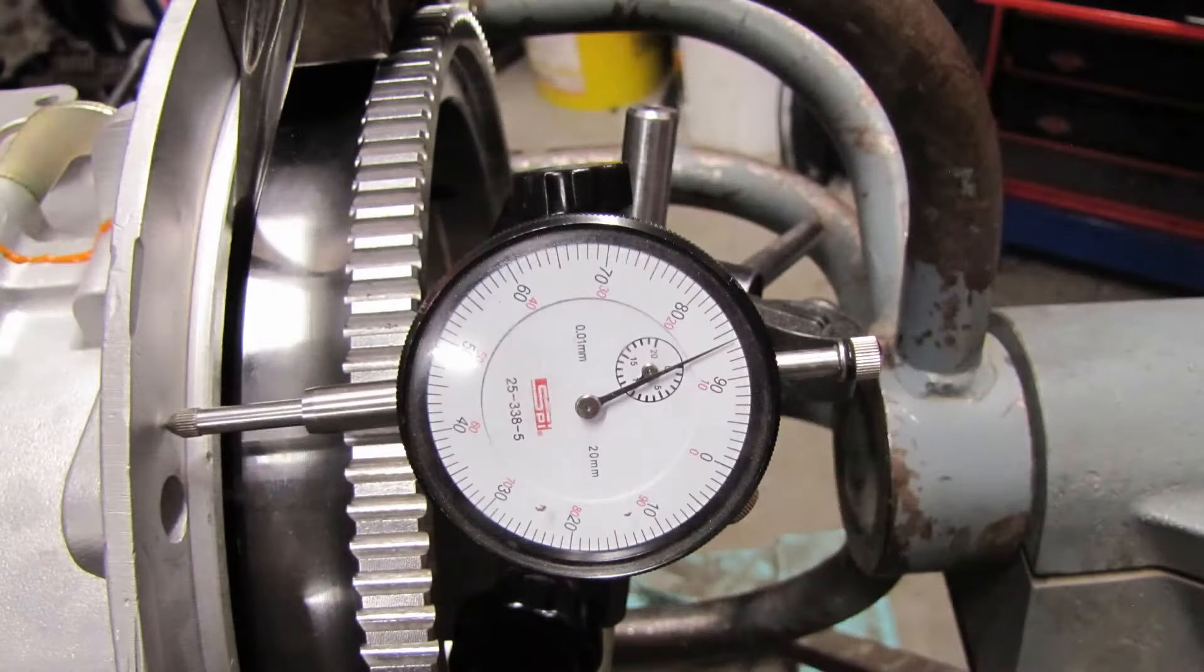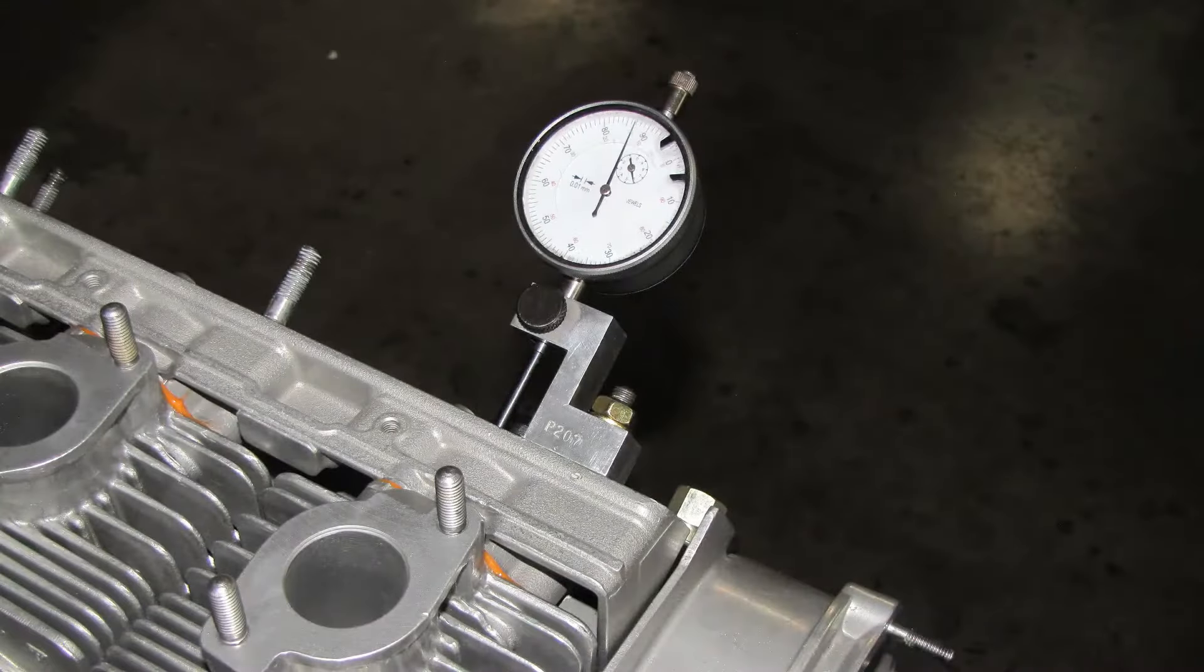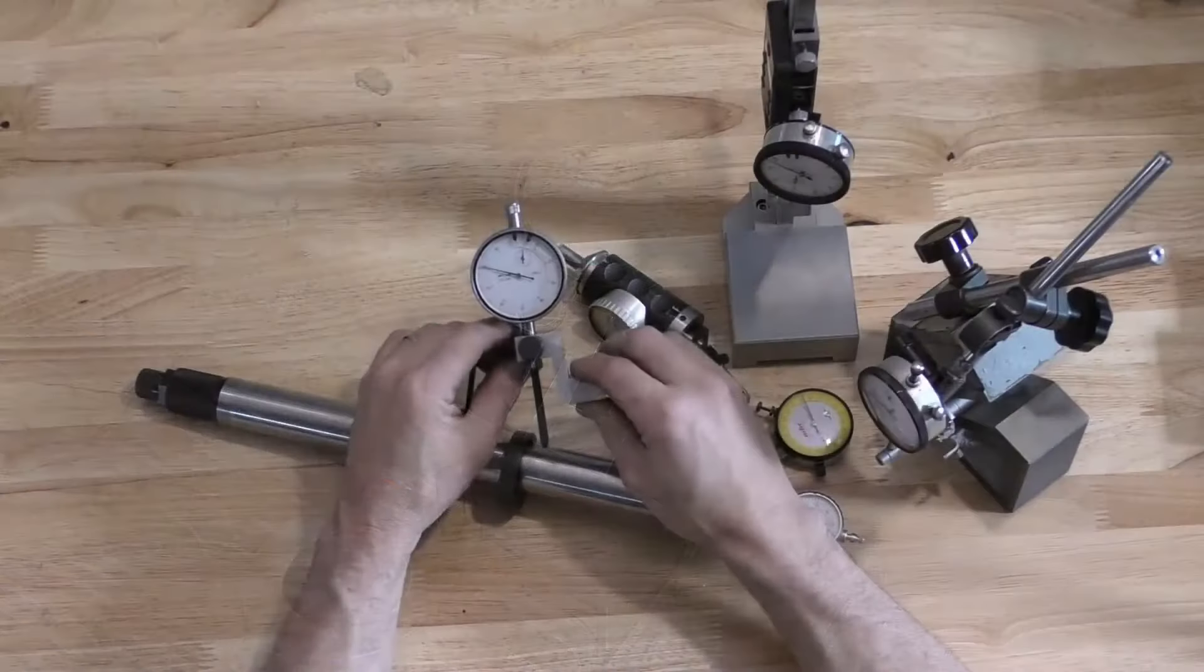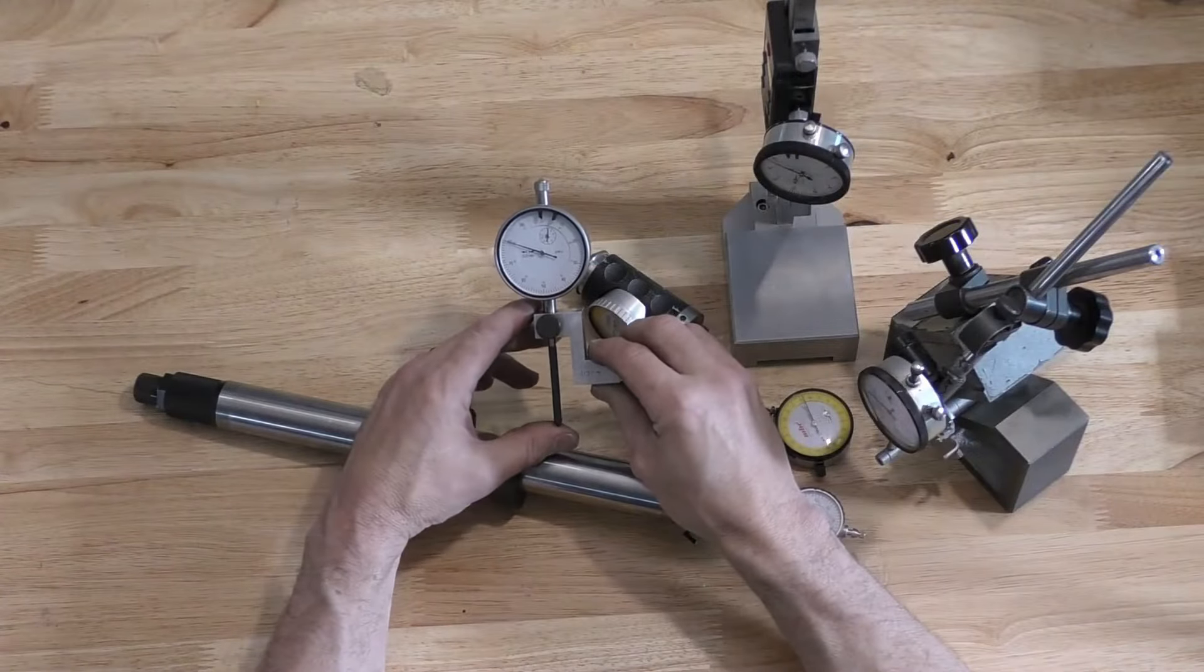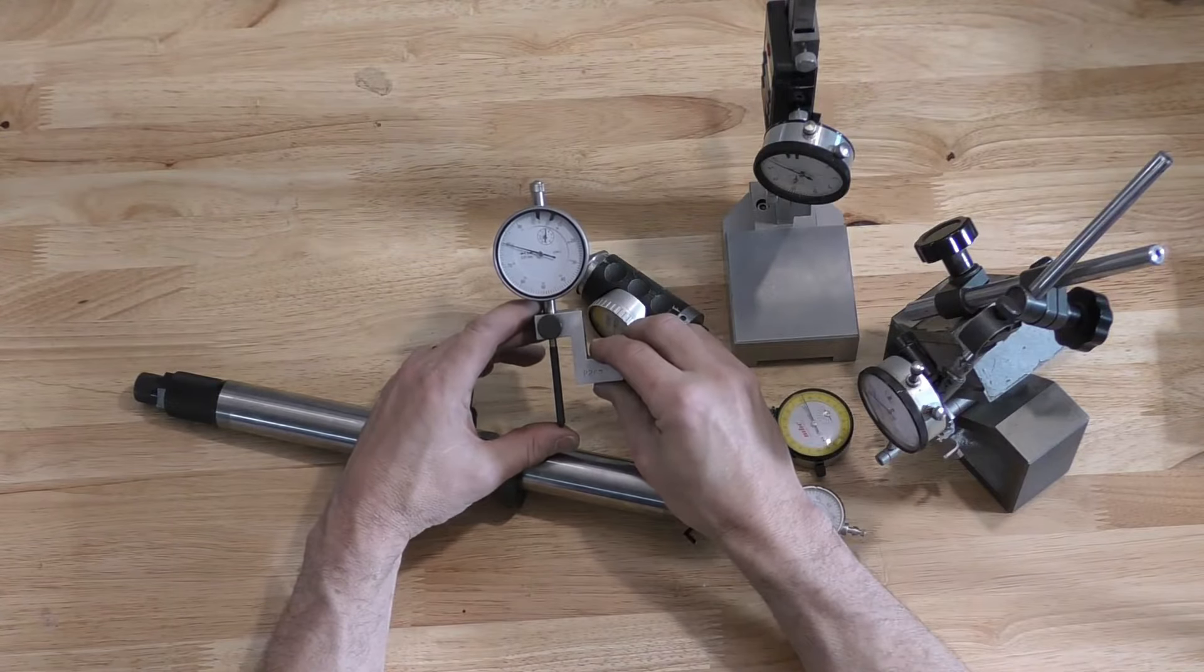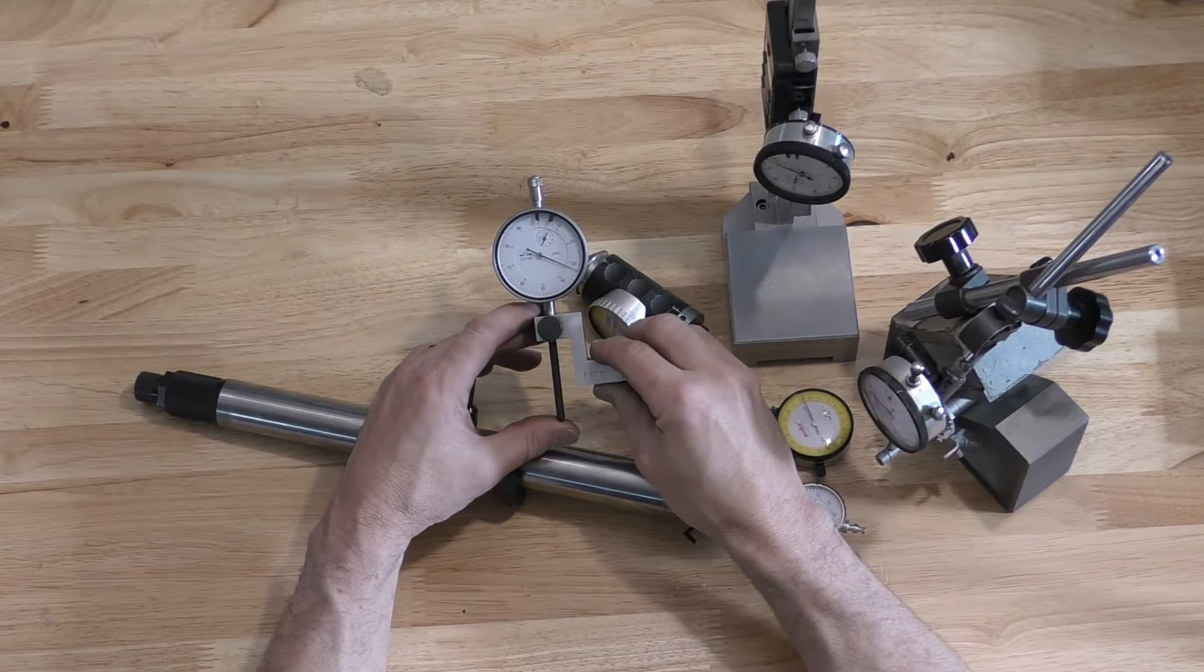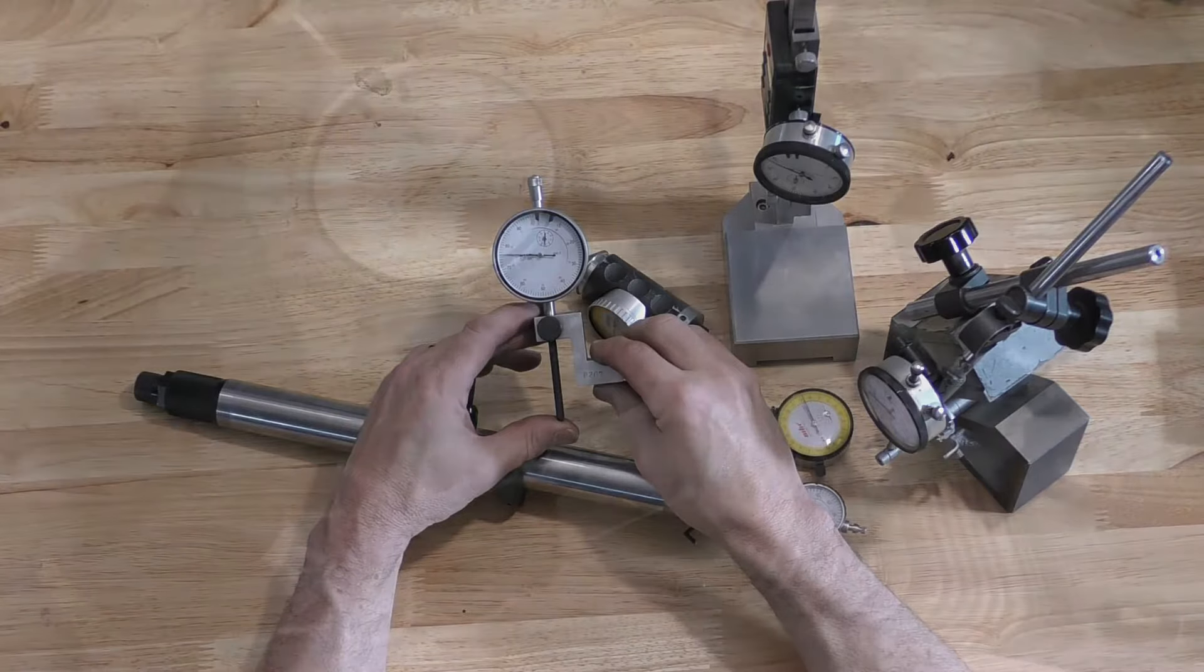These can be used in a number of different methods and manners. This particular one is on our Z block and the Z block is used on a 911 engine when we're setting our valve timing. When we are using it in a valve timing application we're going to preload the gauge because the valve is actually going to be pushing down.